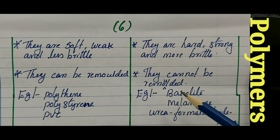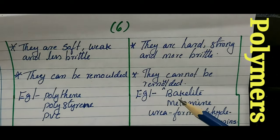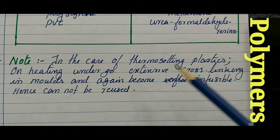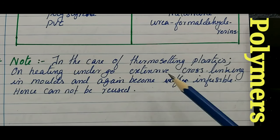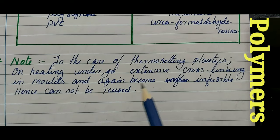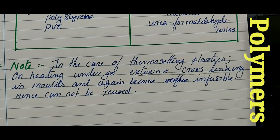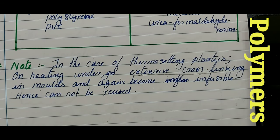An important point for your examination: in the case of thermosetting plastics, on heating, extensive cross-linking takes place in molds, making them infusible — so you cannot reuse them. Stay tuned; I'll be uploading Polymers Part 2 soon. Don't forget to subscribe. Thank you.